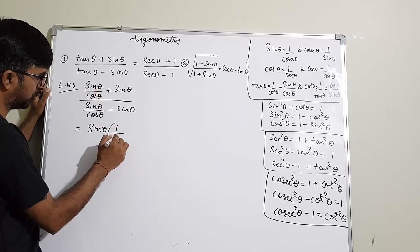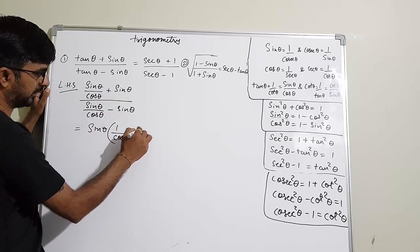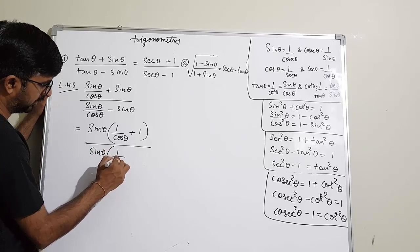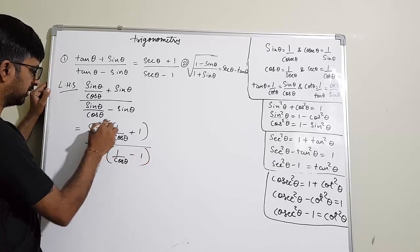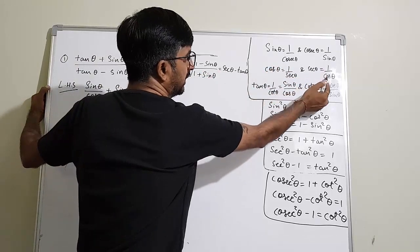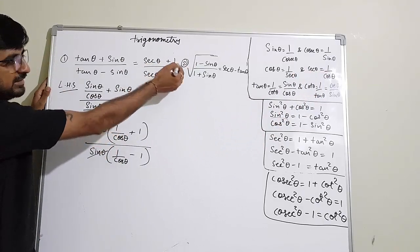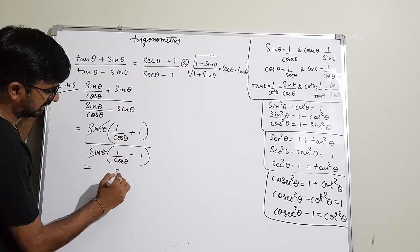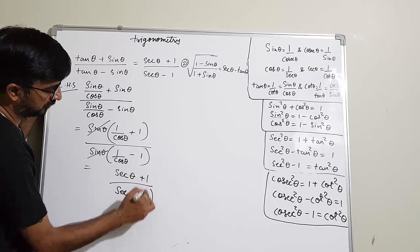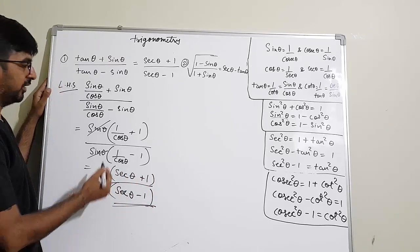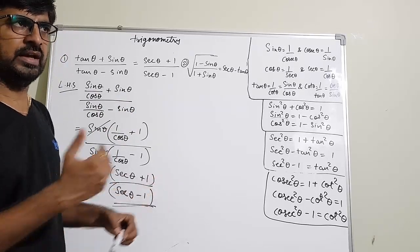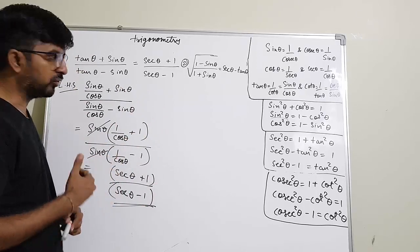Taking sin θ common from numerator and denominator, you get 1 by cos θ plus 1 upon 1 by cos θ minus 1. Since 1 by cos equals sec θ, directly we get sec θ plus 1 upon sec θ minus 1. You can see how easily we have solved this. Otherwise students find LCM and do 5 to 6 conversions, but this shortcut solves it directly.